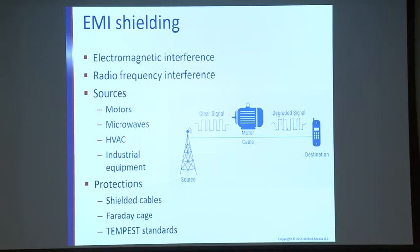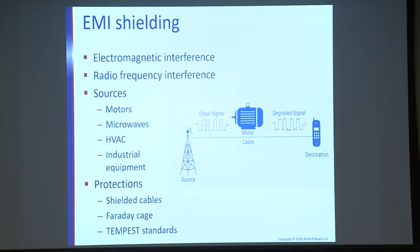Tempest standards address the fact that older cathode ray tube monitors could be scanned from behind using a tool to read the data being displayed on screen — you could actually watch the lines being built and read the data. The Tempest standard prevents that from happening. With modern flat screens this is much more difficult, making current systems considerably more secure.